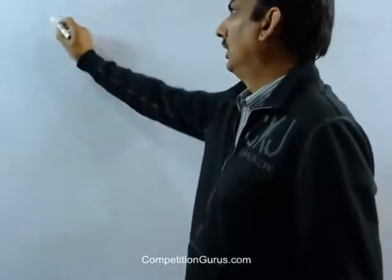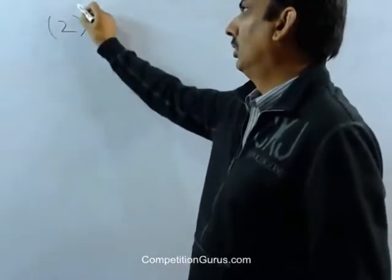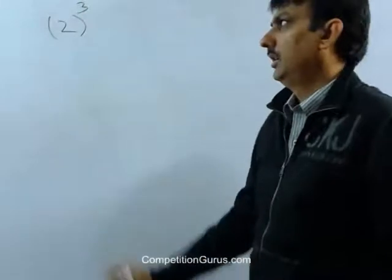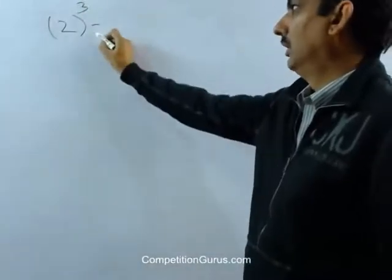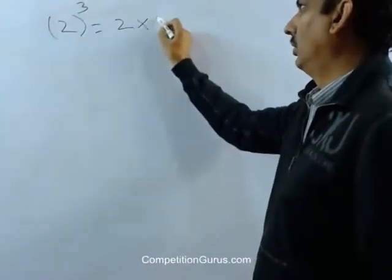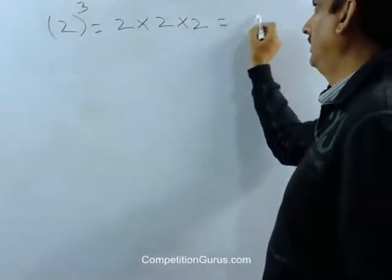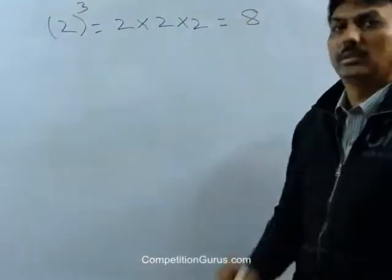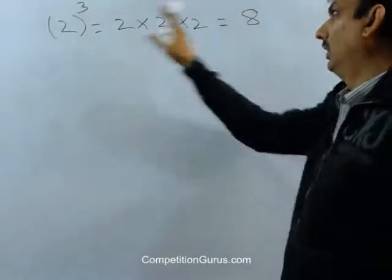If I have a number, say 2, then 2 cube means 2 raised to the power 3. This is 2 cube. This is equal to 2 into 2 into 2, and this is equal to 8. So 2 cube is equal to 8.